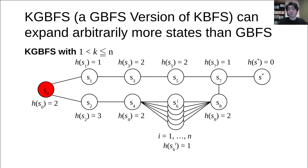In contrast, K-GBFS with K equal to N or less than N, expands S1 and S2 simultaneously. Then S3 and S4. Now we have S5 and S6-1 to S6-N. Because each S6-I has the H value of 1, K-GBFS must expand all these states before expanding any other state.